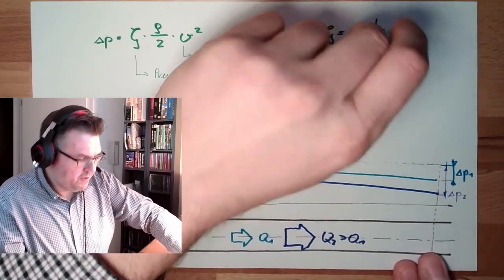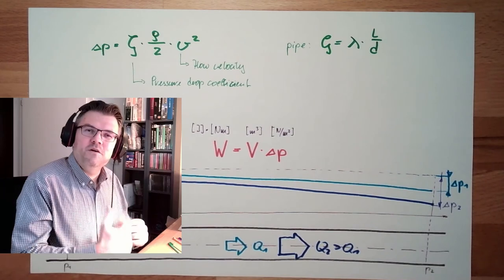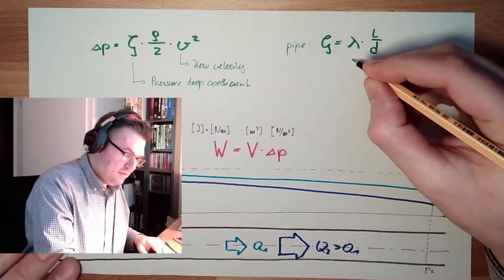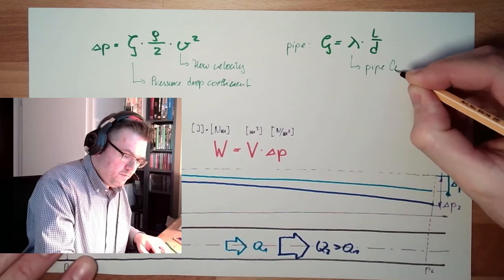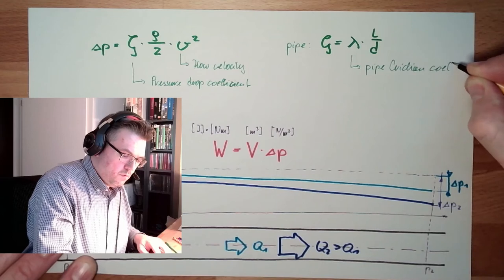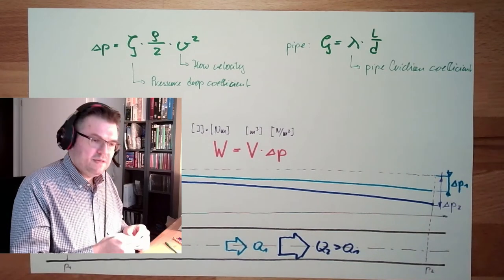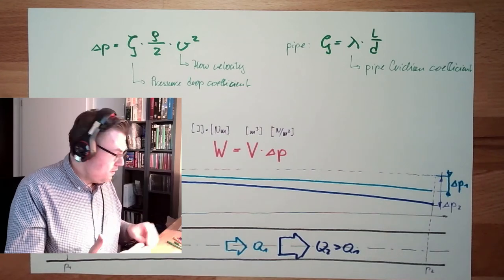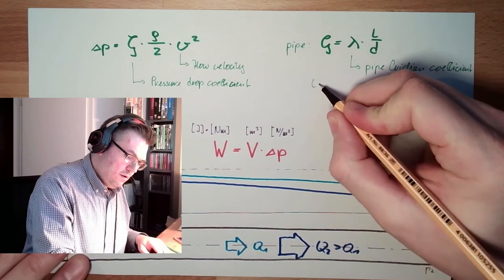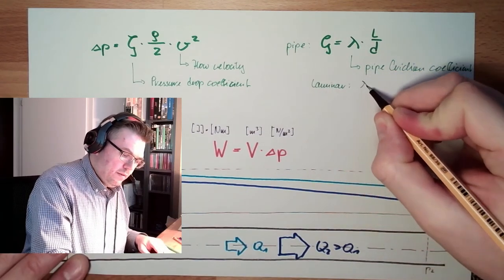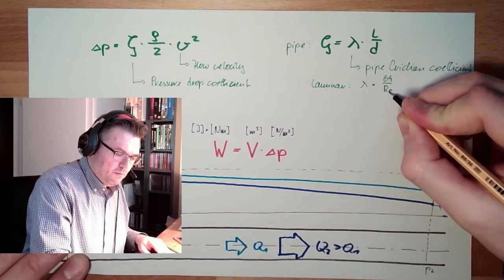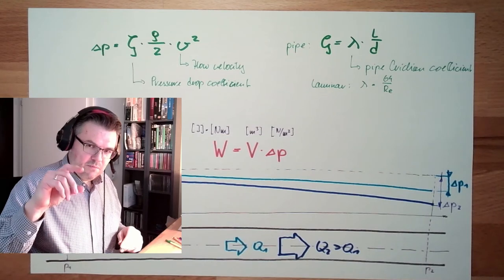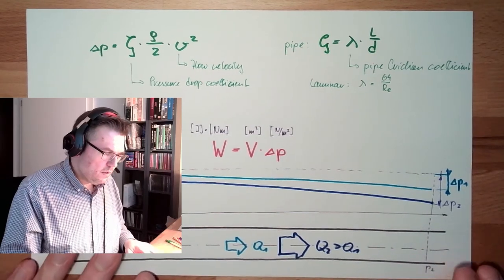This lambda here, this friction, pipe friction coefficient, this is depending on the Reynolds number. And also on the type of flow. If it's laminar flow, we can even give a formula for lambda. This lambda is 64 divided by the Reynolds number. And this Reynolds number we talked last time. This is the stuff where is also the velocity inside, and there is the diameter inside, and there's also the viscosity inside.